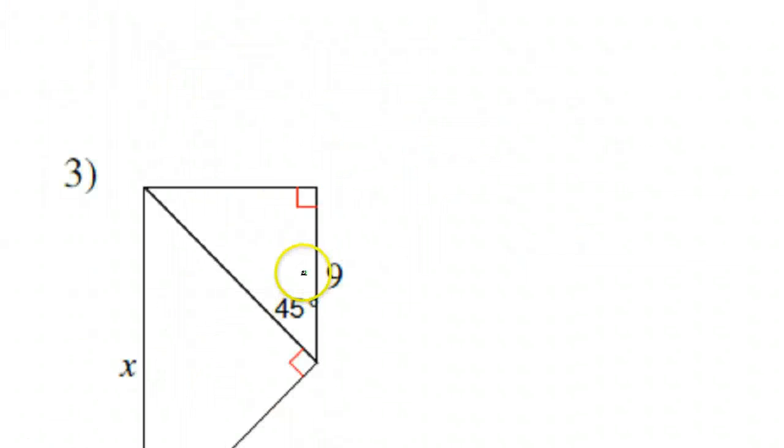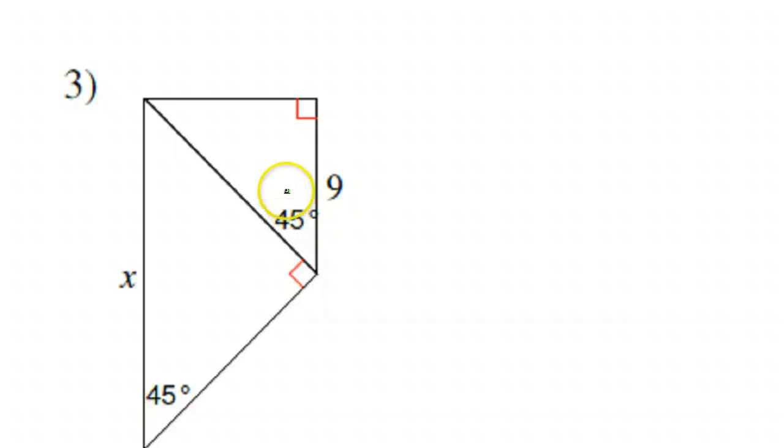Let's hunt down problem number 3. Problem number 3, again with the 45, 45, 90 triangle. So if this is 9, then this is 9, and this must be 9 radical 2. That's how it works. Leg, leg, and the hypotenuse is leg radical 2.